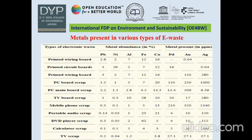Metals present in various types of e-waste: As we know, over 1000 different metals or substances are present in e-waste. In different types of e-waste — such as BWB, PCB, PC scrap, PC mainboard scrap, TV, mobile phones, portable audio scrap, DVD player, wires, and calculators — different metals are present. This chart shows the percentage of metal present in different types of e-waste.